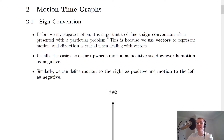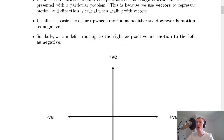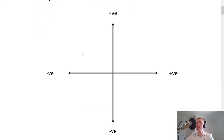We're going to start by looking at sign convention. Before we investigate motion it is important to define a sign convention when presented with a particular problem. This is because we use vectors to represent motion and direction is crucial when dealing with vectors. Usually, but not always, it is easiest to define upwards motion as positive and downwards motion as negative. Similarly, we can define motion to the right as positive and motion to the left as negative.